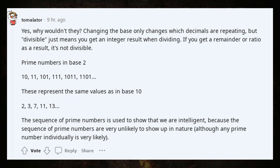Prime numbers in base 2: 10, 11, 101, 111, 1101. These represent the same values as in base 10: 2, 3, 5, 7, 11, 13. The sequence of prime numbers is used to show that we are intelligent, because the sequence of prime numbers are very unlikely to show up in nature, although any prime number individually is very likely.